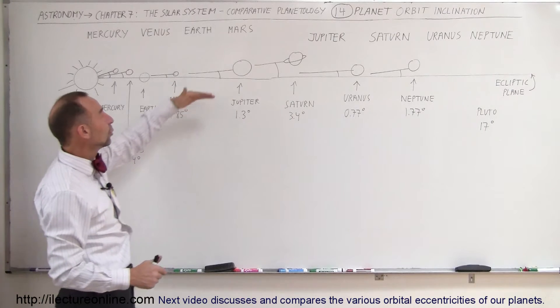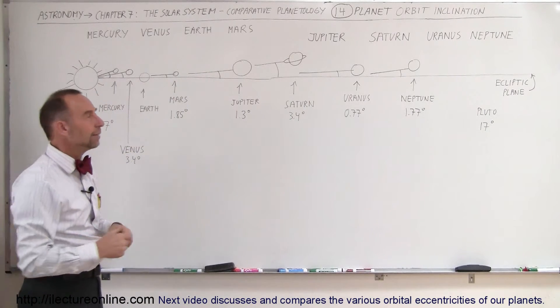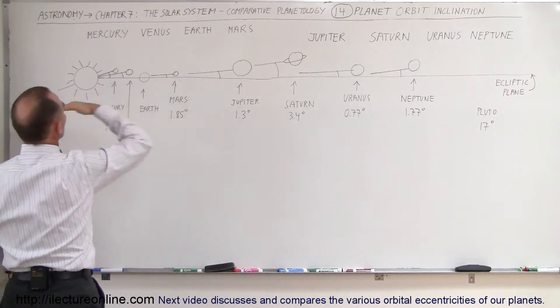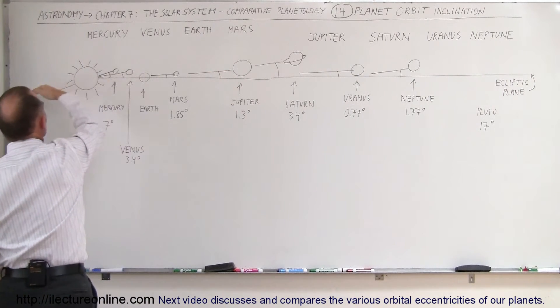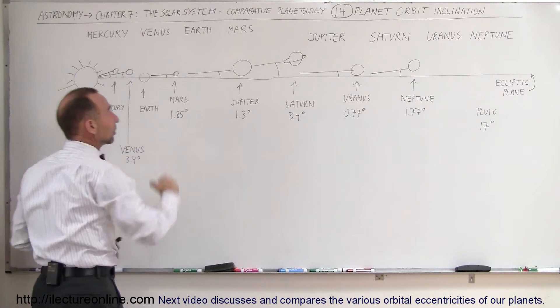And Jupiter is only 1.3 degrees off that ecliptic plane. So you can see as Jupiter goes around the Sun, sometimes Jupiter will be above the ecliptic, and sometimes Jupiter will be below the ecliptic, just like all the other planets.